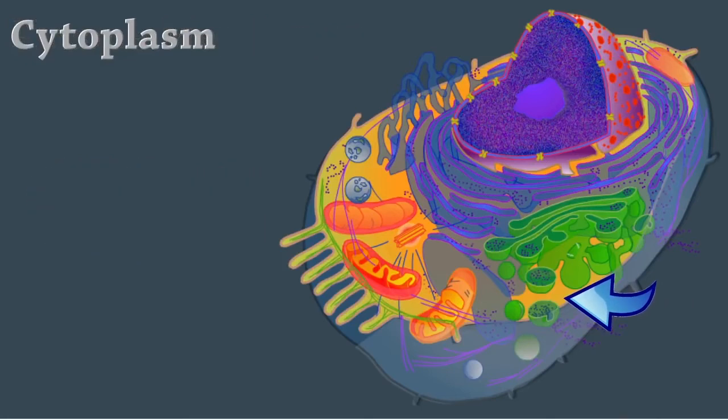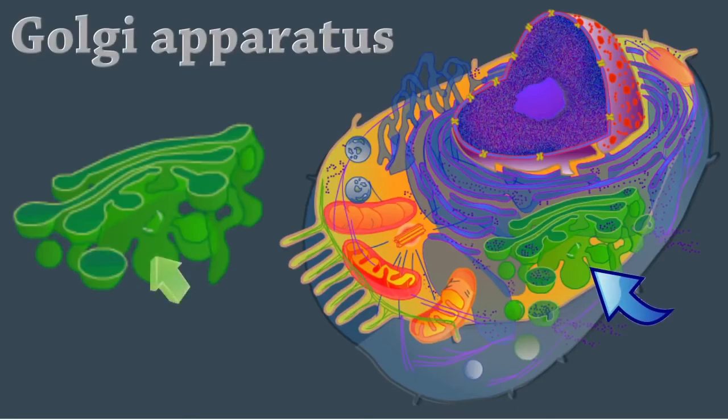The cytoplasm holds all of the organelles, which are specialized subunits within a cell. There are a number of different organelles, and each one performs a specific task. Let's start with the Golgi apparatus, also called the Golgi complex or Golgi body. This is a stack of smooth membrane sacs and associated vesicles close to the nucleus. It packages, modifies, and segregates proteins for secretion from the cell, for inclusion in lysosomes, and for incorporation into the plasma membrane.